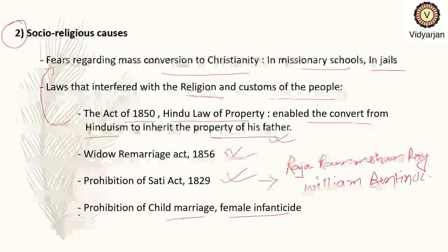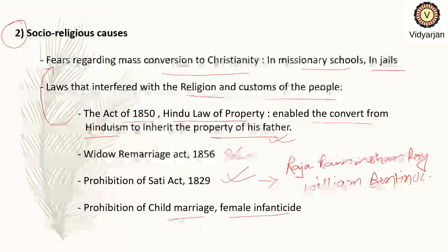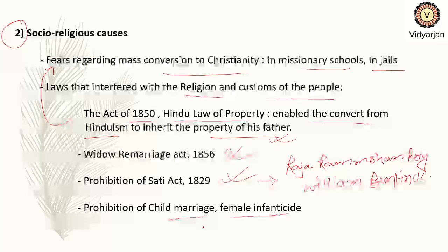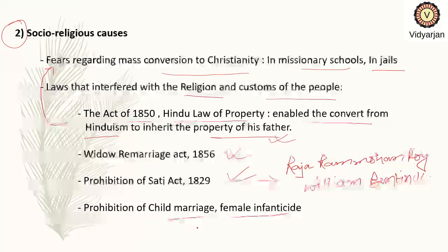Some of these acts were beneficial for society, like the Widow Remarriage Act, the Prohibition of Sati Act, and the Prohibition of Child Marriage and Female Infanticide Act. But still, these laws were seen as going against the customs and religion of the people. The people were very angry with the East India Company and were waiting for a spark to revolt. The situation was ripe for a revolt.